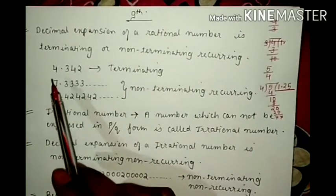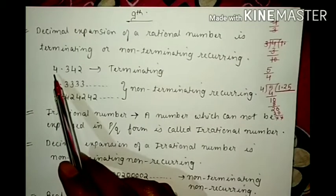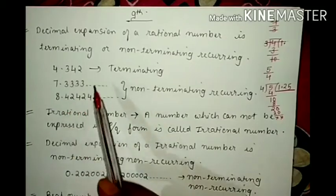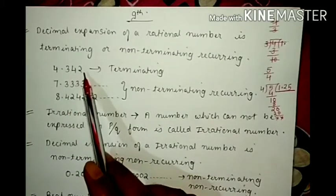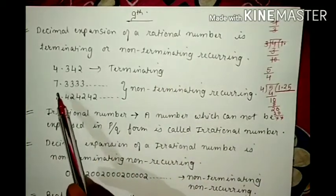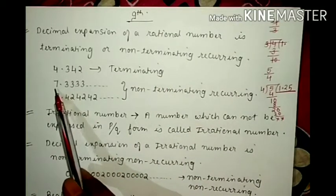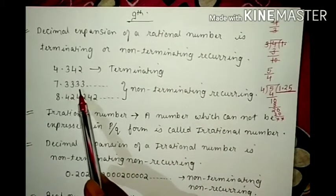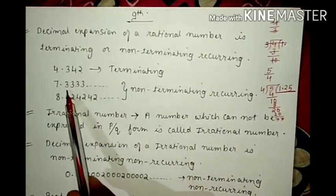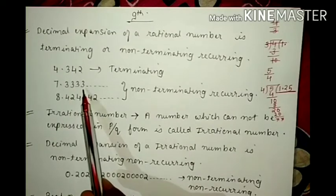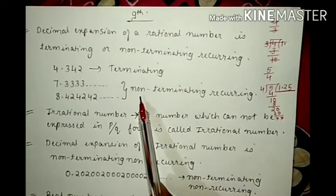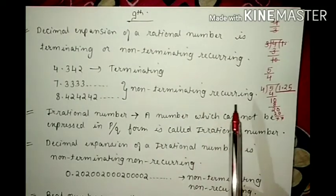Now suppose the decimal expansion of a number is 4.342. At 2 it is ending, that means this is terminating. Now another number is 7.333... — that means 3 is continuing. In this case it is not terminating and it is repeating, so it is non-terminating recurring.